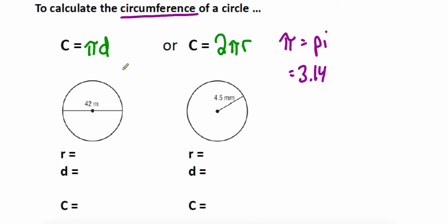In our first example here, 42 is the distance all the way across the shape. So that means it's the diameter. Diameter is all the way across. Radius is just halfway across. So think of it as diameter divided by 2, which is 21 meters.